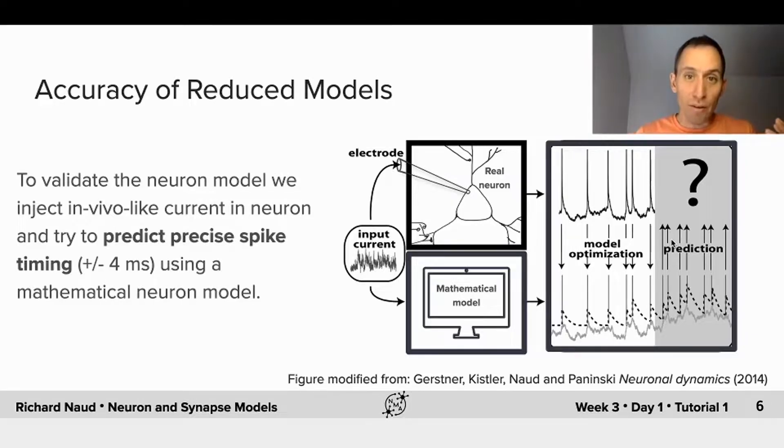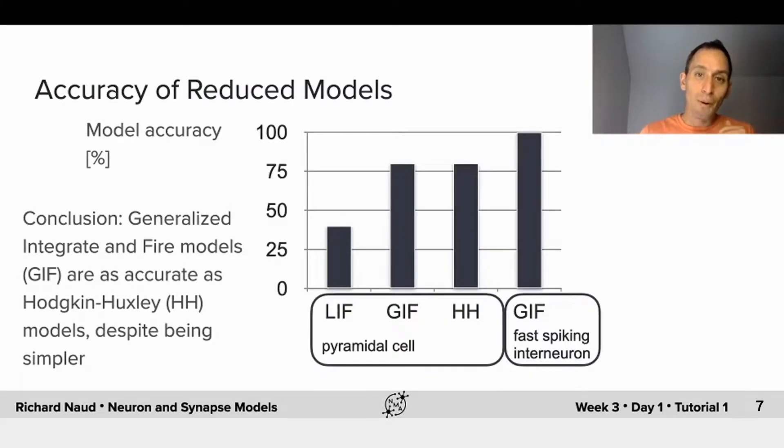Now, how is the model comparison looking like? Well, the leaky integrate-and-fire, maybe not so surprisingly, is not particularly good at predicting the responses. The leaky integrate-and-fire captures 40% of the neurons' variability. The generalized integrate-and-fire, by taking into account adaptive features, is reaching 80% in terms of model accuracy. This is just as much as a much more complicated model, based on non-linear dynamics of the ion channels opening and closing on the cell membrane. That's called the Hodgkin-Huxley type model.